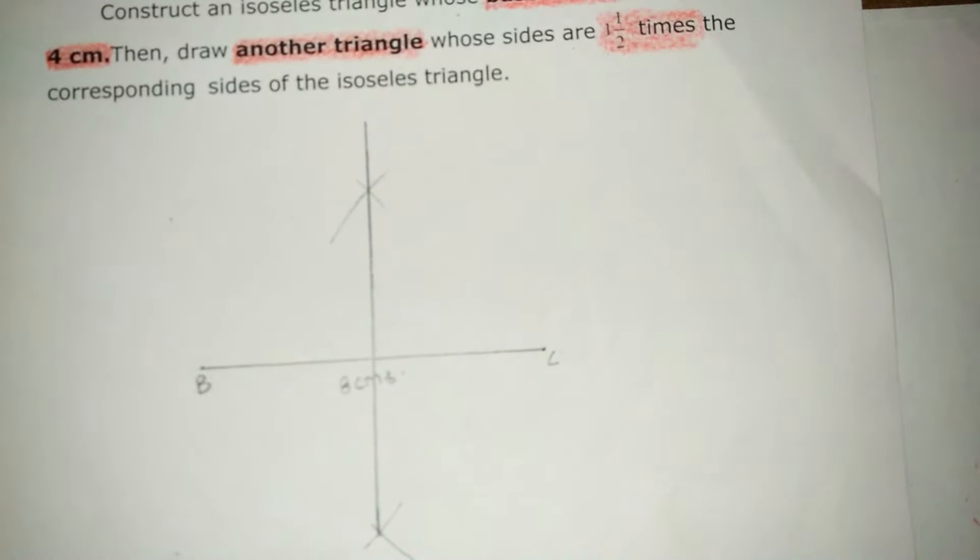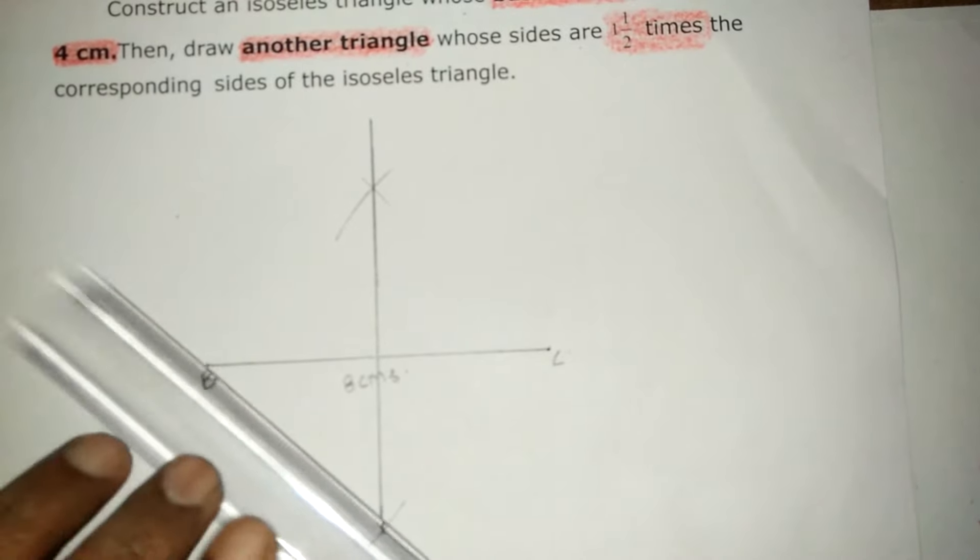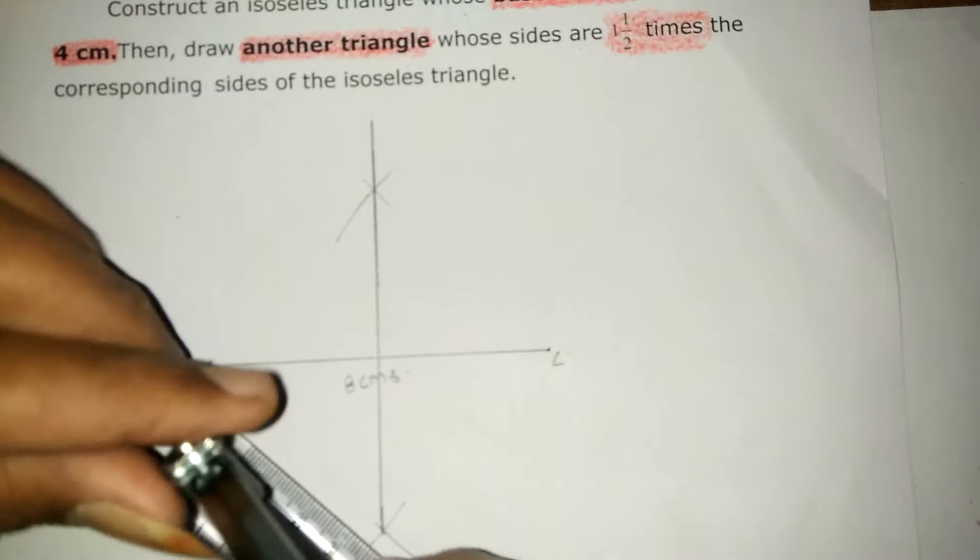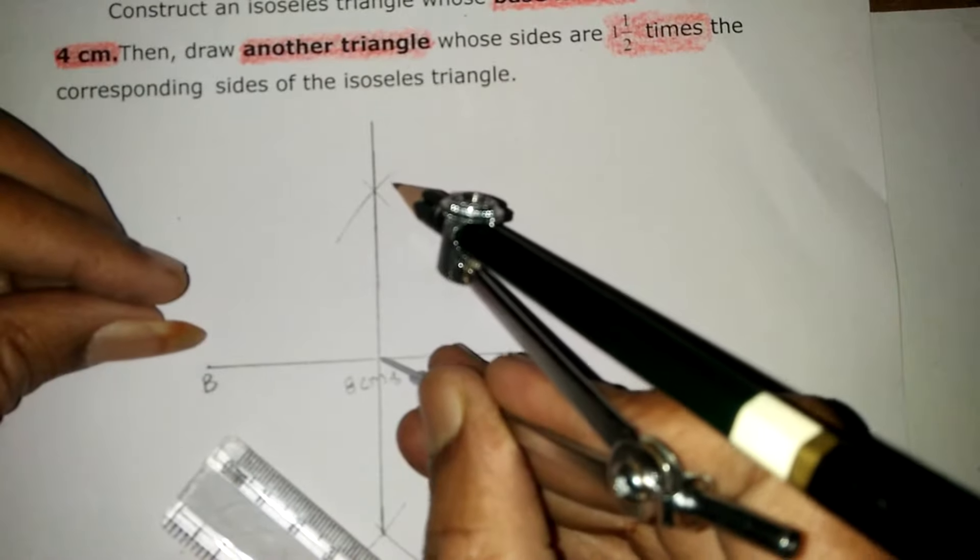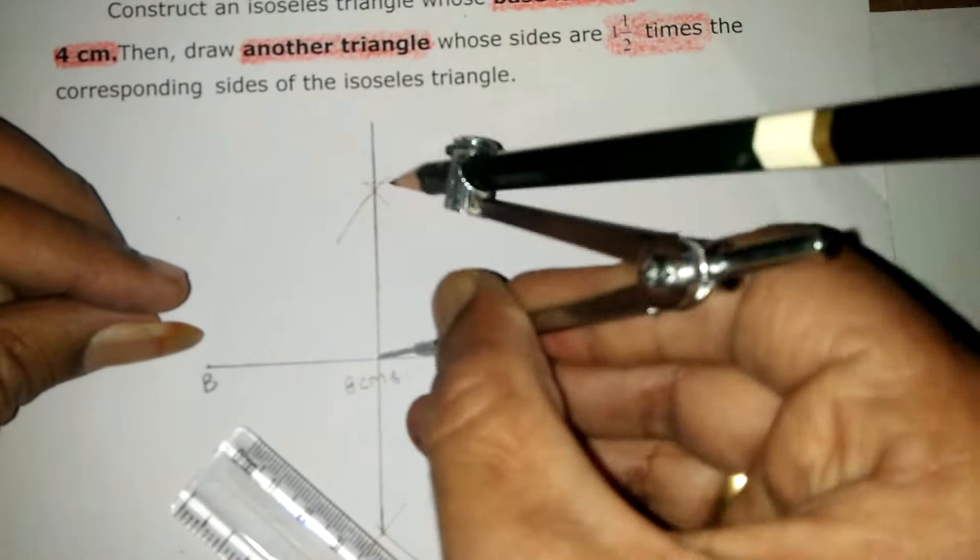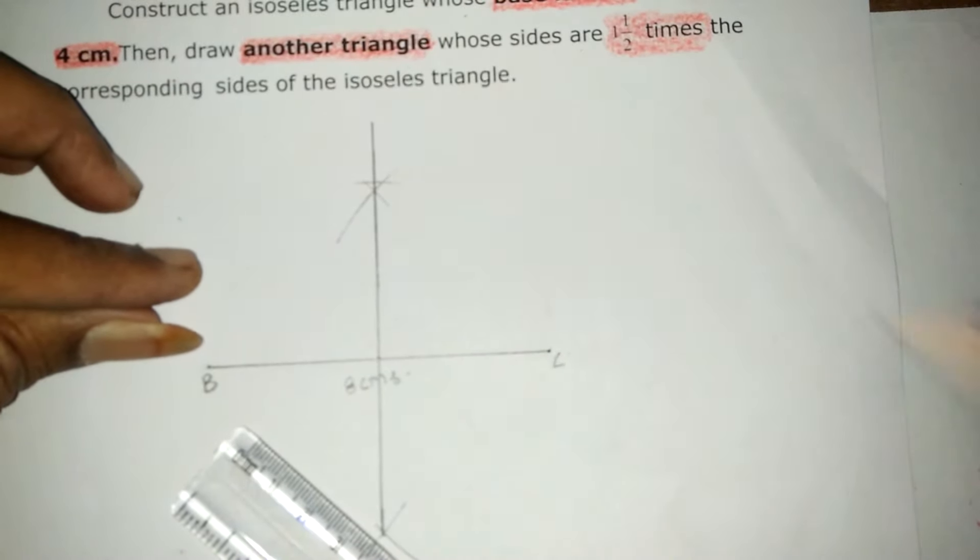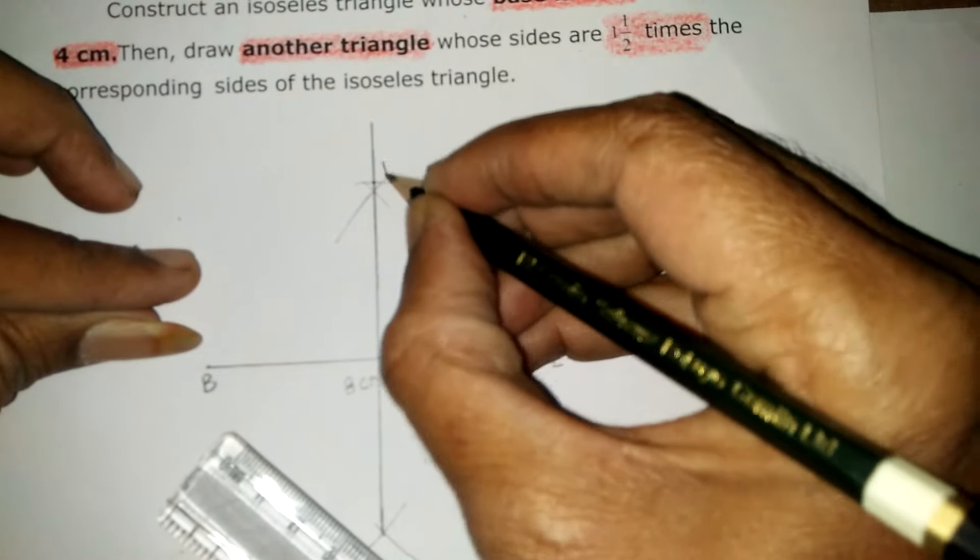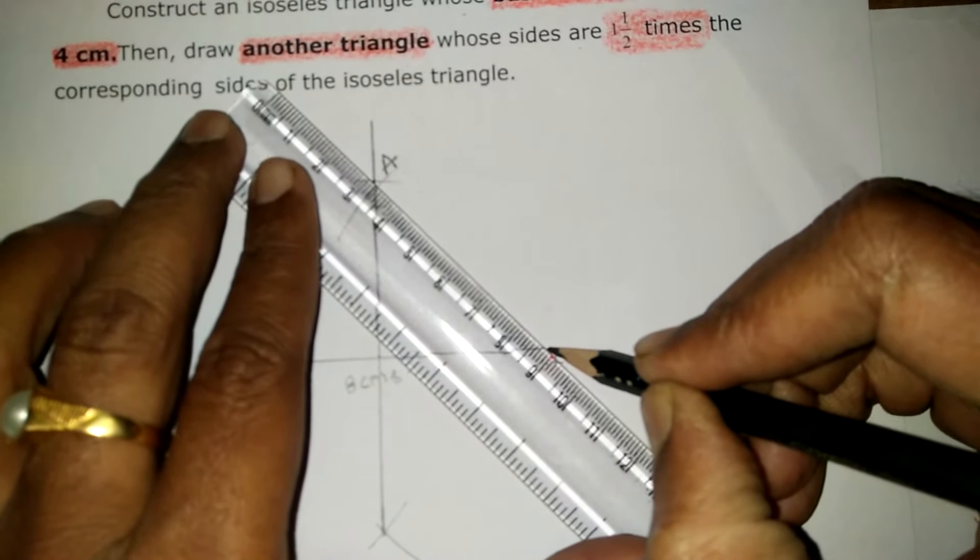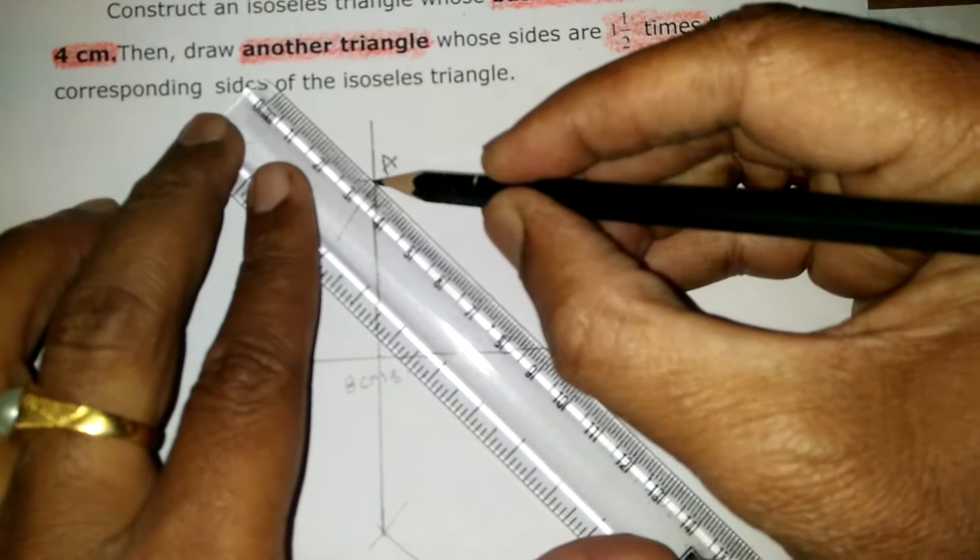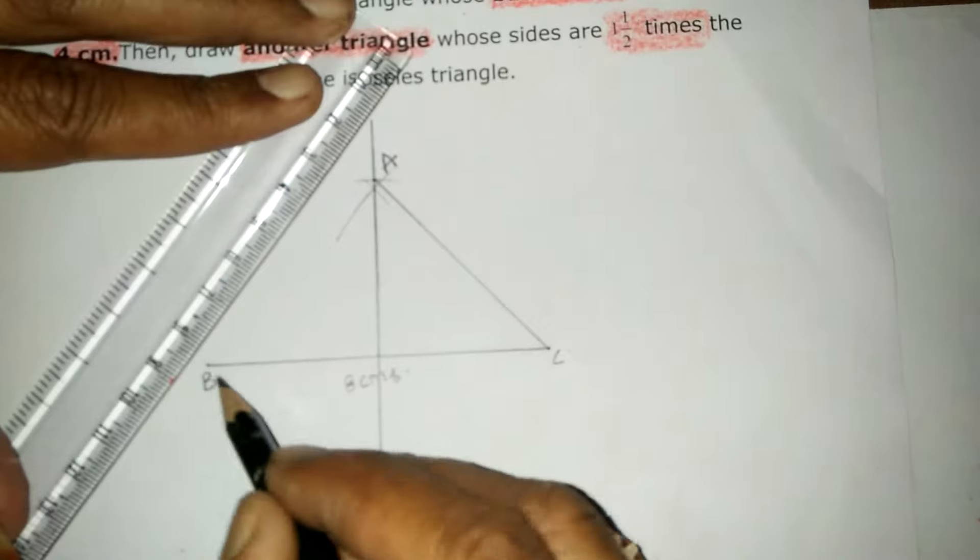The altitude is 4 cm. Taking the radius of 4 cm, put a point. Name it as A. Join AC and in the same way BC.